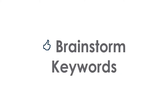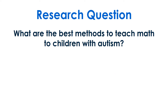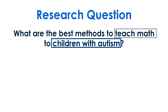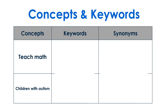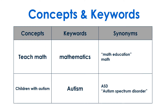Next, brainstorm keywords for your topic. Our research question is: what are the best methods to teach math to children with autism? In this question, the main ideas are teaching math and children with autism. Come up with a list of keywords for each concept and a list of synonyms to try if those keywords don't work.